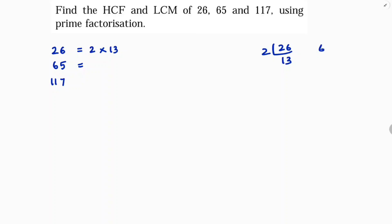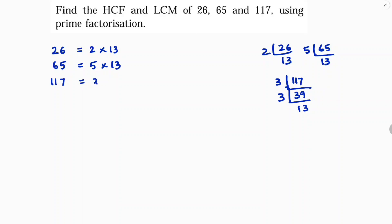65 factors as 5 times 13. For 117, the prime factors are 3 times 3 times 13, which gives us 3² × 13.